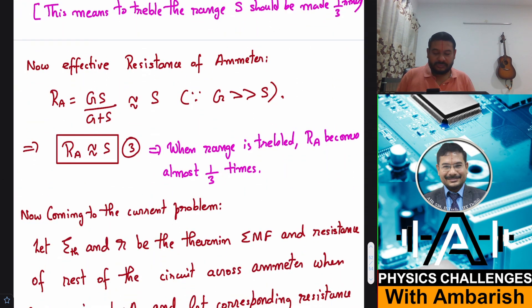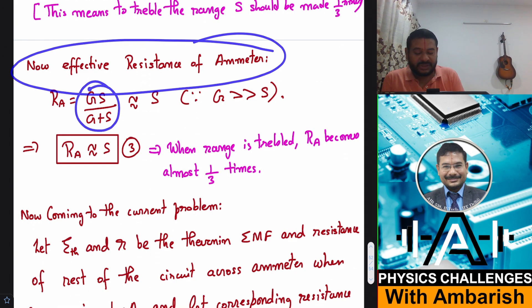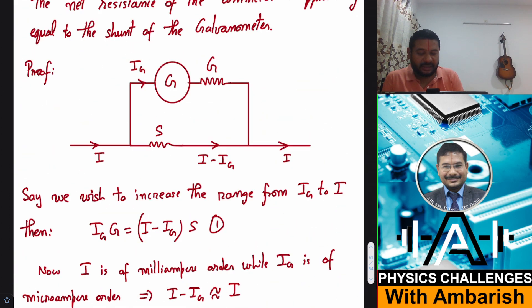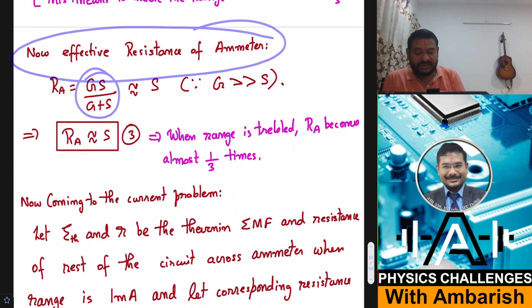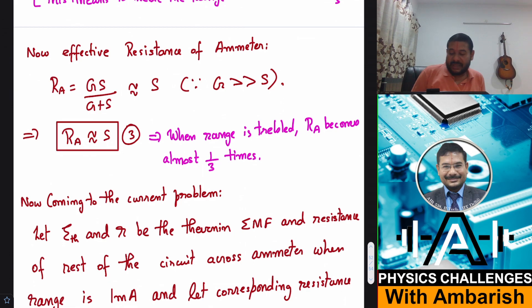Now what's the effective resistance of the ammeter? The effective resistance of ammeter is GS upon G plus S because G and S are in parallel. But this must also be equal to approximately S because I showed you that G is much much greater than S when it's a matter of milliamperes and microamperes.